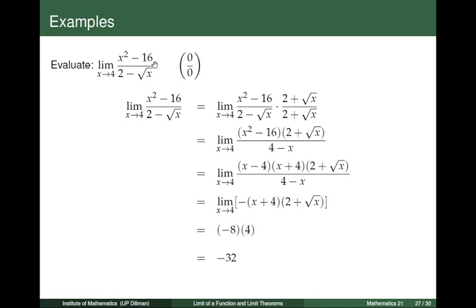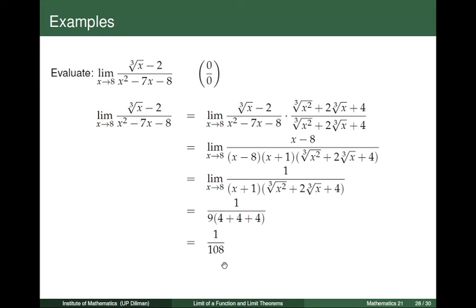So the limit of this expression as x tends to 4 is equal to negative 32. And finally, let us look at the function given by the quotient of the cube root of x minus 2 divided by the polynomial x squared minus 7x minus 8.